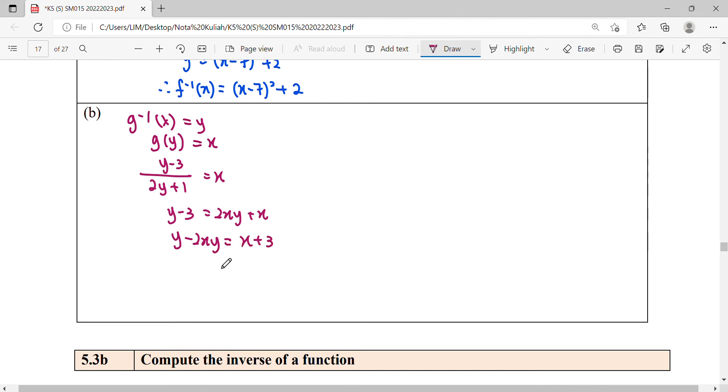From here we factorize the y, so y finally is x plus 3 over 1 minus 2x. Therefore, we get our g inverse equals (x plus 3)/(1 minus 2x). When doing expressions you have to be careful—the denominator cannot be 0, so x cannot be 1/2.